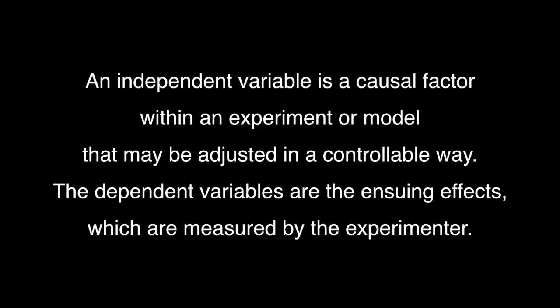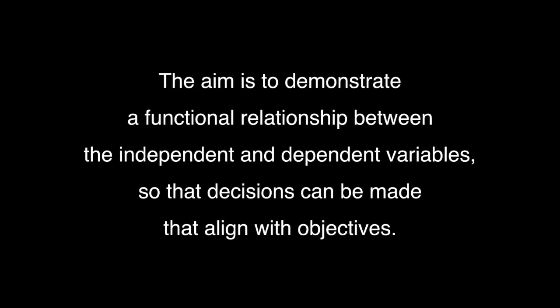Now the reason for this failure is what I choose to call the fallacy of the independent variable. The notion of an independent variable is fundamental to all scientific experiments and to mathematical and statistical models. An independent variable is a causal factor within an experiment or a model that may be adjusted in a controllable way. The dependent variables are then the ensuing effects which are measured by the experimenter. The aim is to demonstrate a functional relationship between the independent and the dependent variables so that decisions can be made that align with objectives. In our example, among the independent variables were the location of the filling station and the address of the car owner.